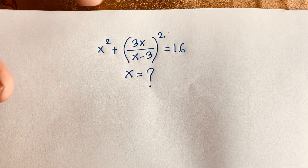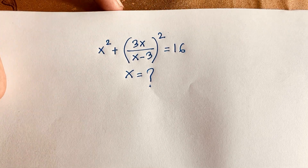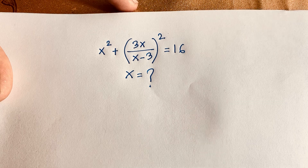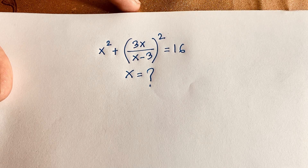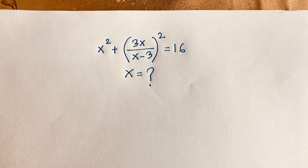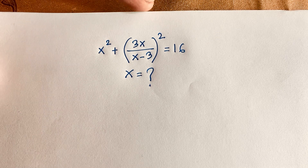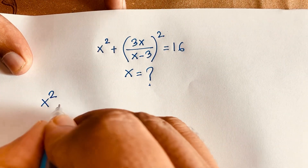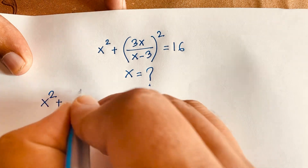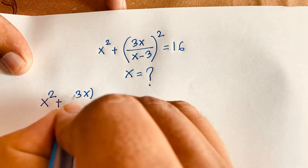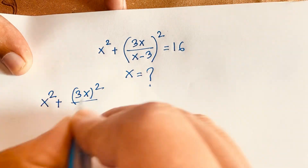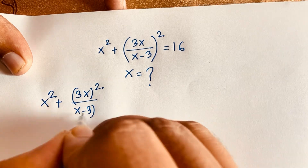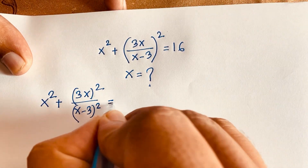Hello everyone. In this video we have solved this German Math Olympiad question: (x² + 3x)² / (x - 3)² = 16. We find out the value of x in this equation.